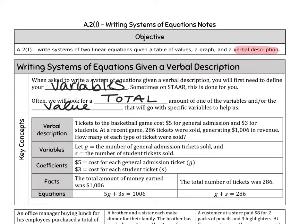So again, when we're writing these verbal descriptions for our systems, we're going to be looking to define our variables, which we're going to literally write down what x and y mean, and we'll look for in the word blurb the word total to find our equal to amount, and then the values that go with specific variables.